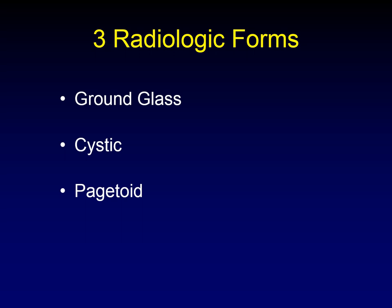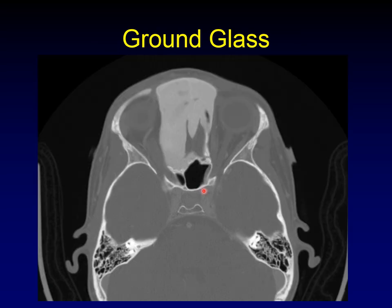There are three radiologic forms of fibrous dysplasia. The one we're all familiar with is the ground glass form that's classically associated with fibrous dysplasia, but it comes in two other forms as well: a cystic form and a pagetoid form. The most common is the ground glass appearance — the classic look of an expanded bone with a uniform appearance of intermediate density bone.